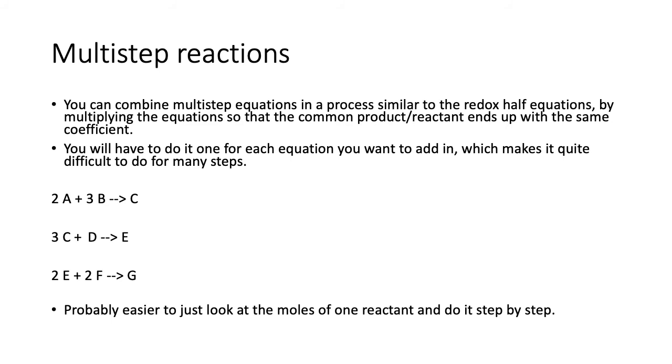So if you really felt like it, you can combine multi-step equations in a process similar to that of redox half equations by multiplying the equations so that the common product or reactant ends up with the same coefficient. You have to do this for each equation you want to add in, which makes it quite difficult to do for many steps. So I'll show you what I mean here. You look at this first one here, and the common reactant product is C.